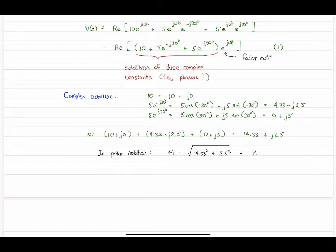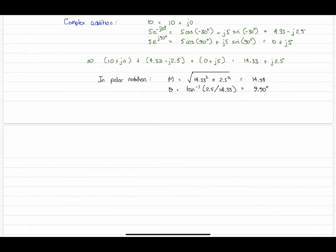Let's turn this back now into polar coordinates. Now we have a single combined resultant vector of length 14.54 at an angle of 9.9 degrees.